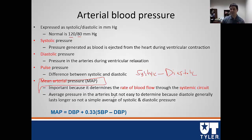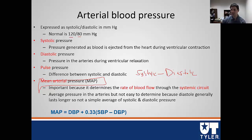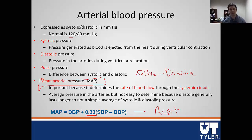However, MAP is not simply the average of systolic and diastolic pressure — it's not just add the two together and divide by two. Instead, we take diastolic blood pressure and add one-third times the pulse pressure, or systolic minus diastolic. This is only valid at rest. This equation is completely invalid at exercise because the time spent in systole and diastole changes significantly.